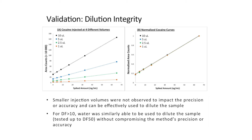For dilution factors greater than 10, water — a nice solvent because it's so cheap and readily available — was similarly able to be used to dilute the samples. I tested this up to a dilution factor of 50, and it similarly didn't compromise the method's precision or accuracy.